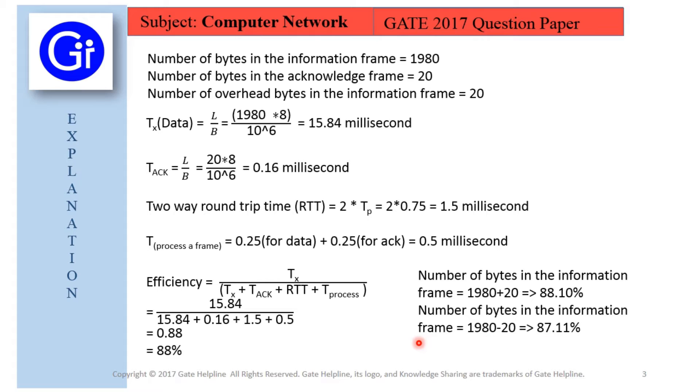So friends, according to us we have taken all three scenarios: taking the information frame or the correct data frame as 1980, 1980 plus 20, and 1980 minus 20, and calculated the efficiency which we get as 88%, 88.10%, and 87.11%.